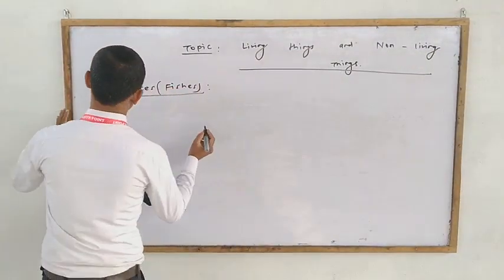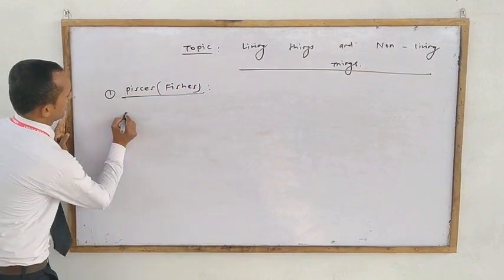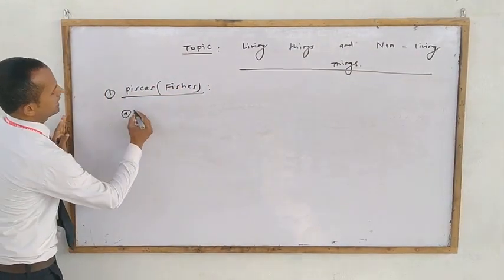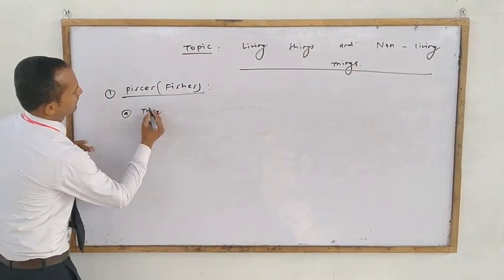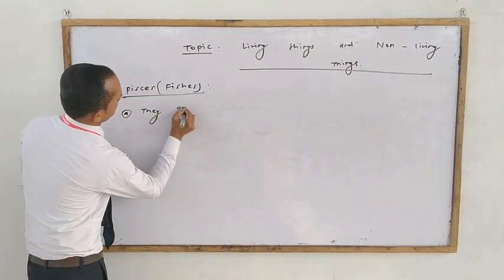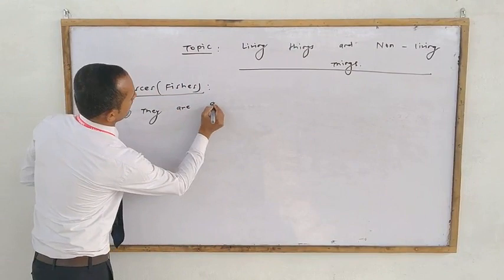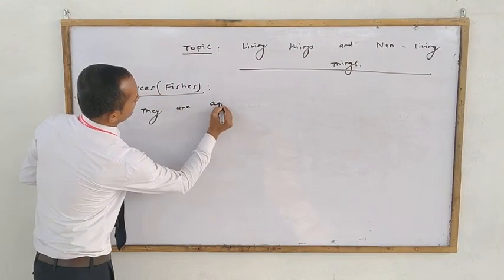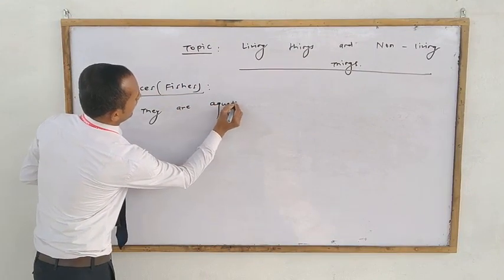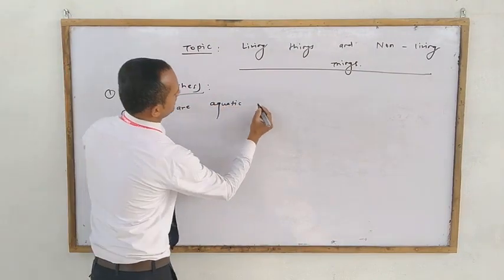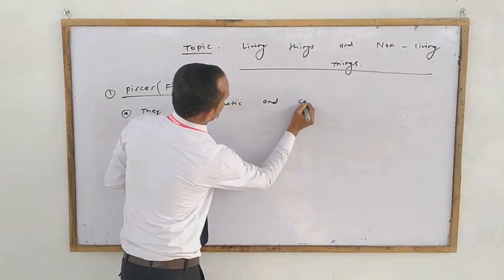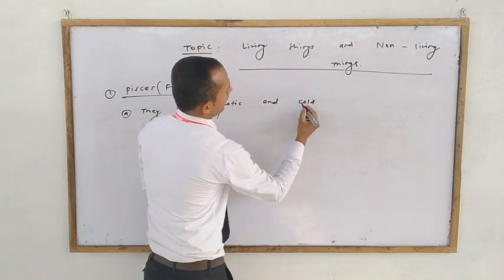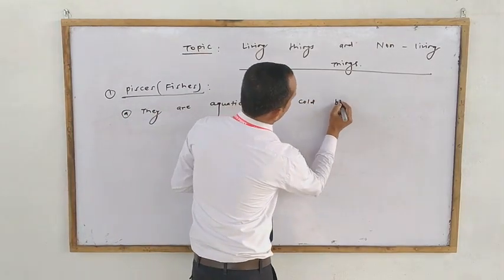For example, fishes are aquatic animals, they are cold-blooded animals, and they are covered with scales.